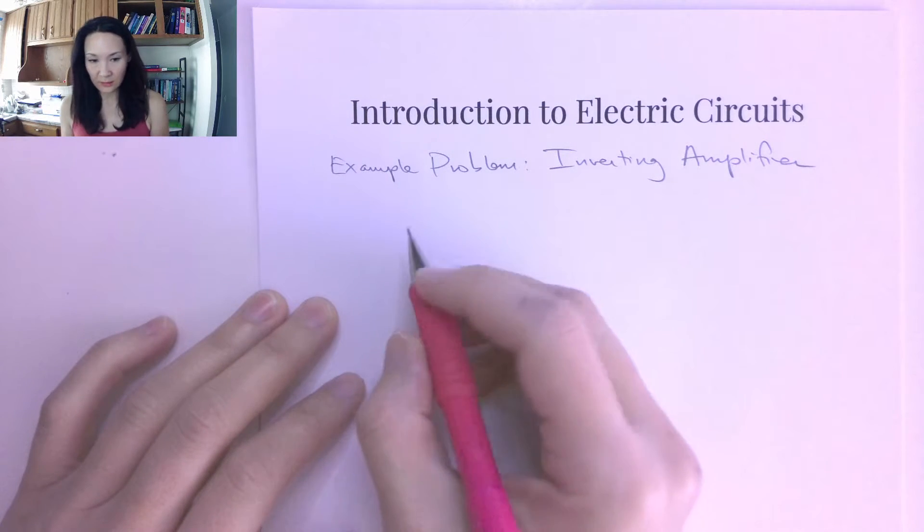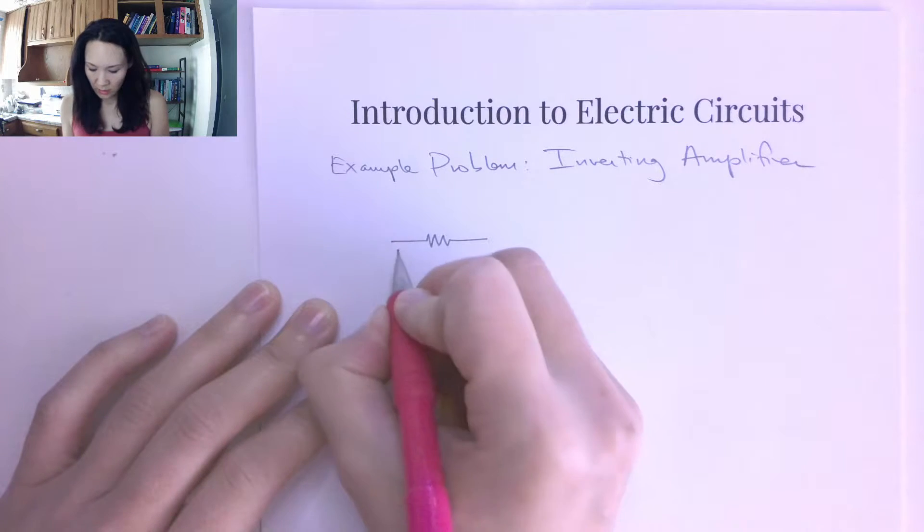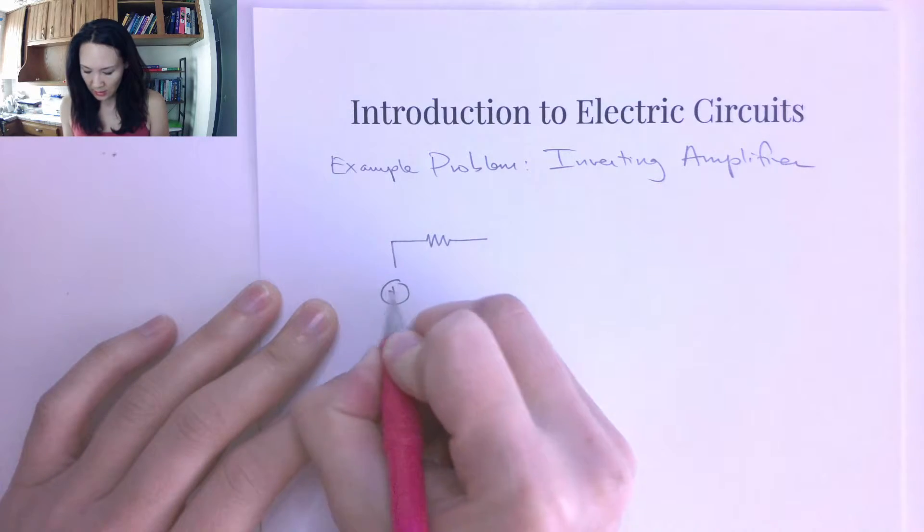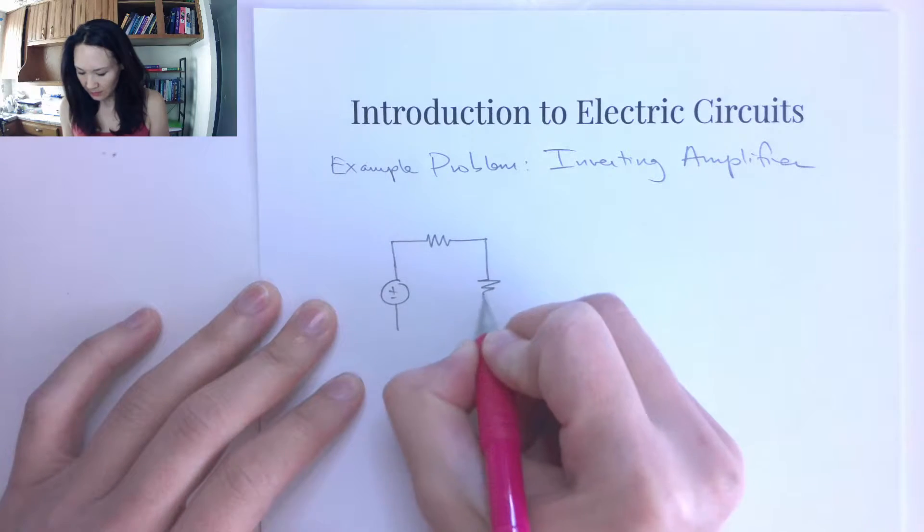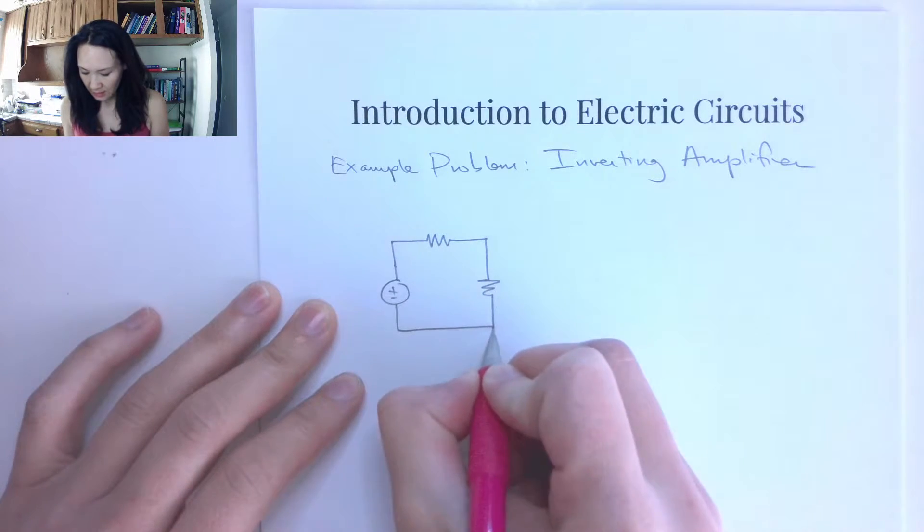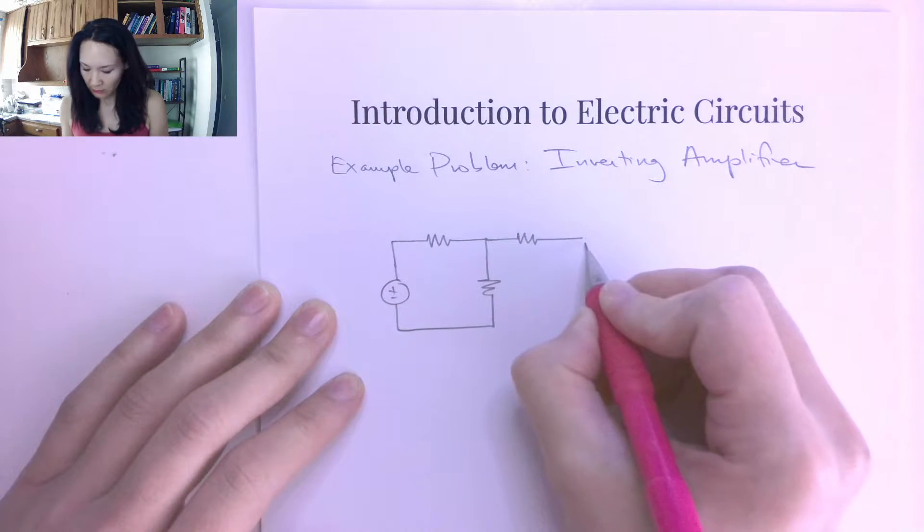Hi students, in the last video we introduced the inverting amplifier with an op amp. Now I'm going to show you an example problem of what one of these circuits might look like that has an input voltage connected to the inverting input to the amplifier.